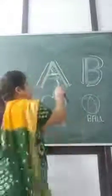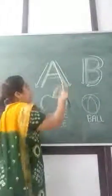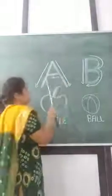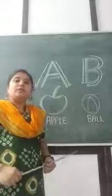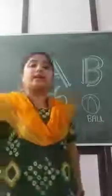How do we write the letter A? A slanting line, another slanting line and a sleeping line in the middle makes the letter A.